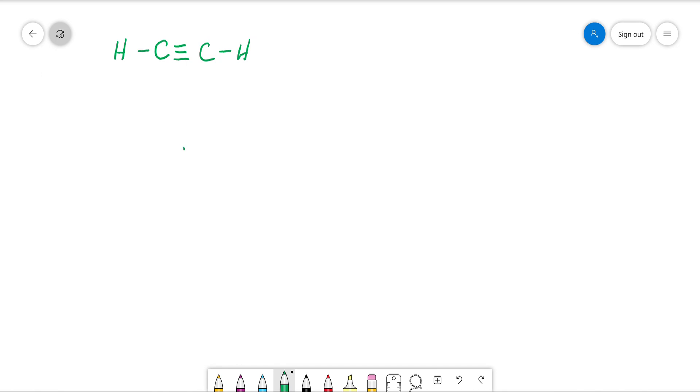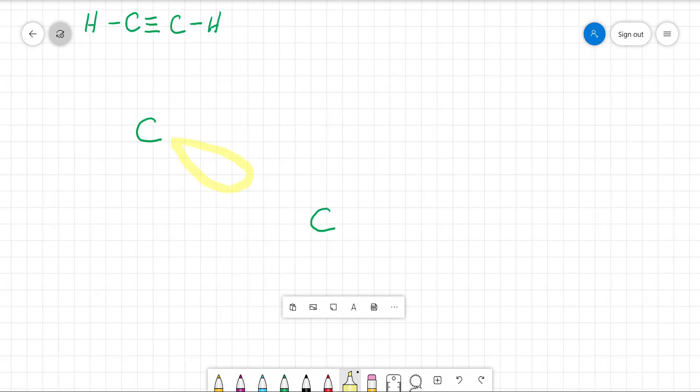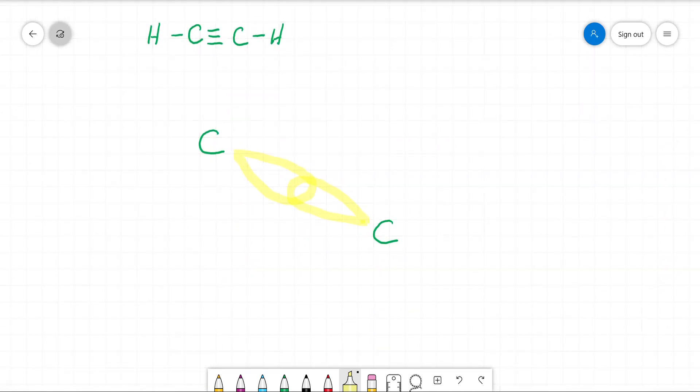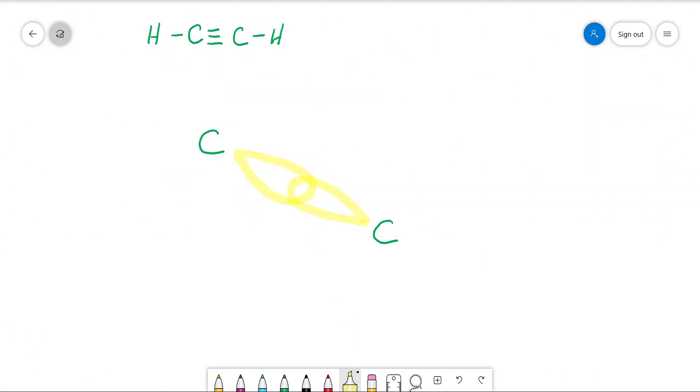Okay, so first I want to add the sp orbitals. Okay, so they are along the axis because notice this molecule is linear. So they are along the axis, and then there's another sp orbital coming down here. Okay, so those are sp's. So this is an sp, this is an sp, this is an sp, and this is an sp. Remember, each carbon has two sp orbitals.